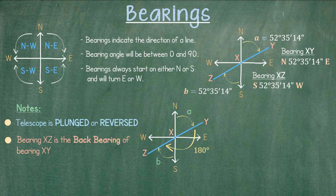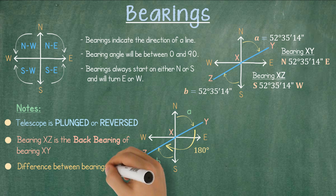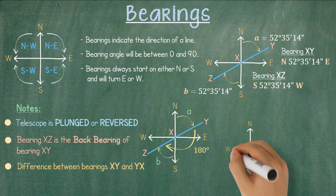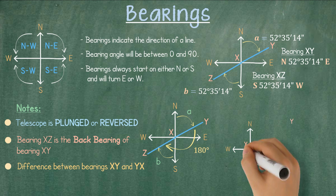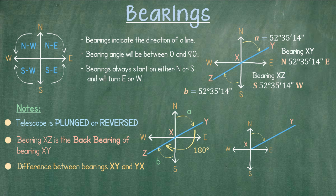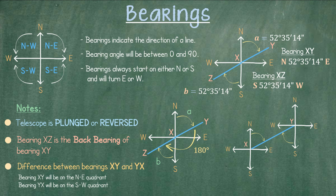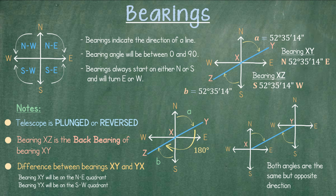One last item worth mentioning is the difference between bearings XY and YZ. Let's draw our quadrants with a line from point X to Y and indicate our angle at the northeast quadrant. We also draw our quadrants at point Y to better illustrate the differences between bearings XY and YZ. The angle for bearing YZ is at the southwest quadrant — both angles are the same but in opposite directions. This is a common mistake when calling out bearings: the first letter will always indicate the origin. We have put together another video with several worked problem examples for you to practice and better understand these concepts.